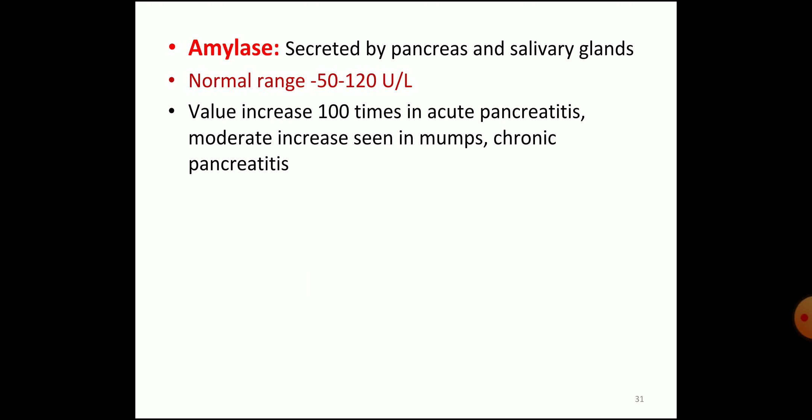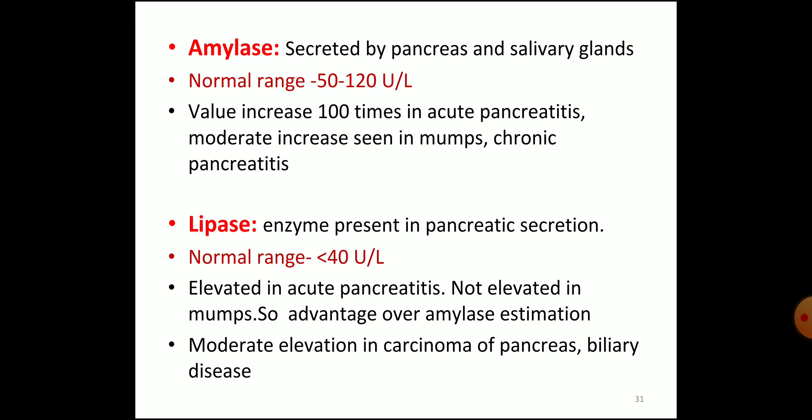Amylase is secreted from the pancreas and salivary gland; normal range is 50 to 120 units per liter. Values increase 100 times in acute pancreatitis; moderate increase is seen in mumps and chronic pancreatitis. Amylase level is a marker of acute pancreatitis. Similarly, lipase is an enzyme present in pancreatic secretion; normal range is less than 40 units per liter. Lipase is elevated in acute pancreatitis but not elevated in mumps — this is an advantage over amylase estimation. Moderate elevation in carcinoma of pancreas and biliary disease are also seen.